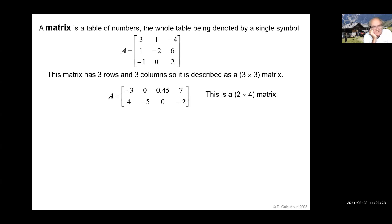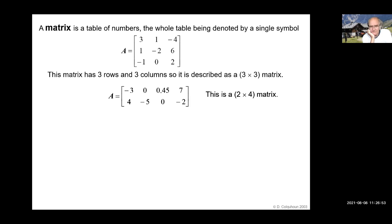A matrix is just a table of numbers and you denote by a single letter the whole table of numbers. For example, A could be this table. A matrix is generally written in bold face italic to distinguish it from an ordinary number. There are no new principles involved in matrix algebra, just ordinary arithmetic and algebra. It's not like calculus — it's much easier than that. It's just a sort of notation, but a very convenient one.